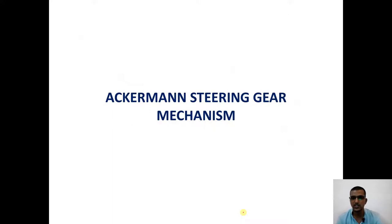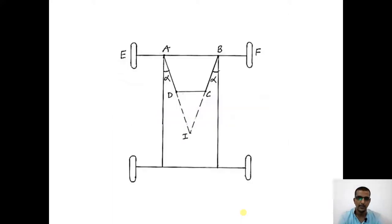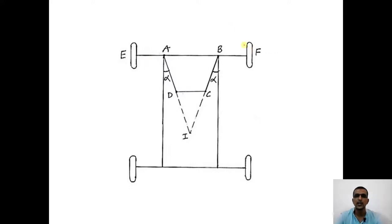Now let us take up the first example of the steering gear mechanism — the Ackerman steering gear mechanism. In this mechanism, A, E and B, F are the stub axles. It is essentially a four-bar linkage: A, B, C, D form the four-bar link.